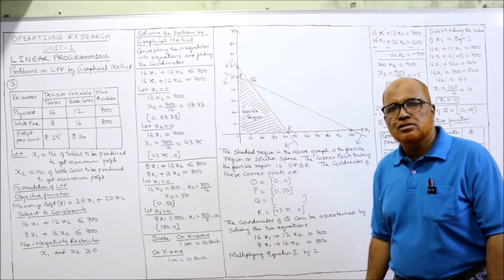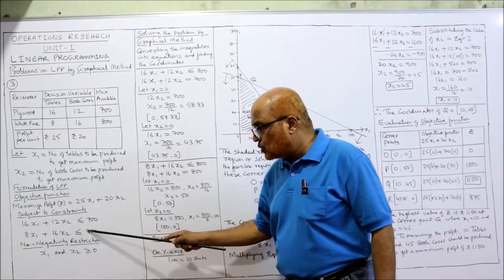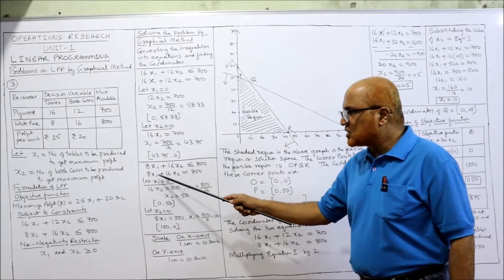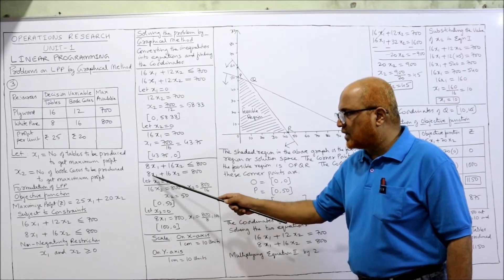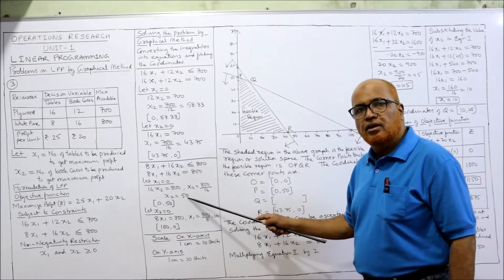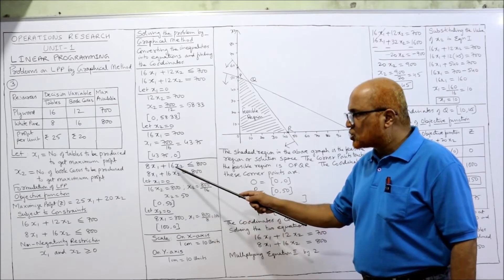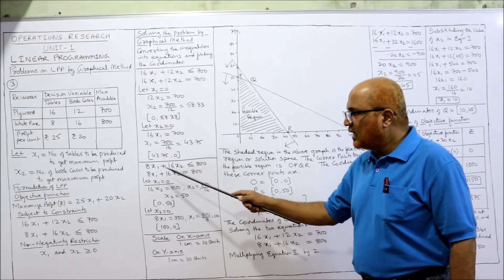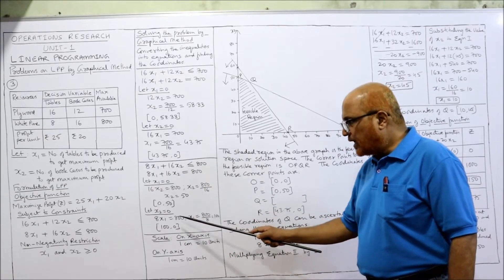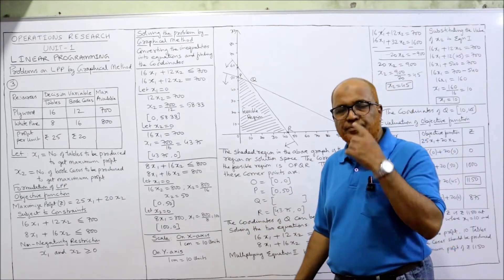Now the second inequality: 8x1 + 16x2 ≤ 800, equation is 8x1 + 16x2 = 800. Let x1 = 0: then 16x2 = 800, so x2 = 800/16 = 50 — coordinate (0, 50). When x2 = 0: then 8x1 = 800, so x1 = 800/8 = 100 — coordinate (100, 0). We now have the coordinates of both inequalities.